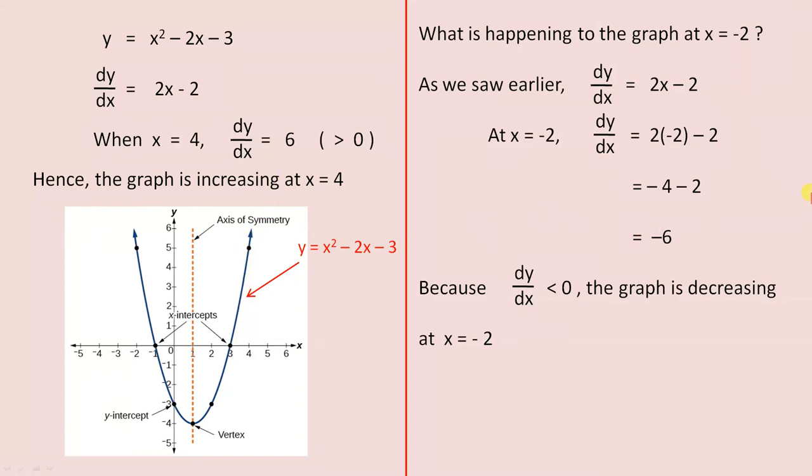What is happening to the graph at x equals negative 2? We just saw that dy/dx was 2x minus 2. We substitute minus 2 into that, and we get dy/dx equals 2 times minus 2 minus 2, which is minus 4 minus 2, which is minus 6.